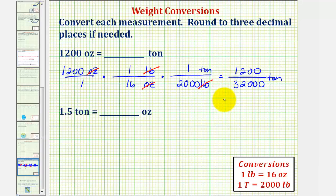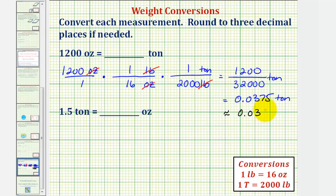1,200 divided by 32,000 gives us 0.0375 tons. The exact weight in tons is 0.0375, but because our directions say to round to three decimal places, we could also say this is approximately 0.038 tons. Notice how the 5 in the fourth decimal place indicates we round up, so we increase the 7 to an 8. Depending on the directions, you could express your answer in one of these two ways.